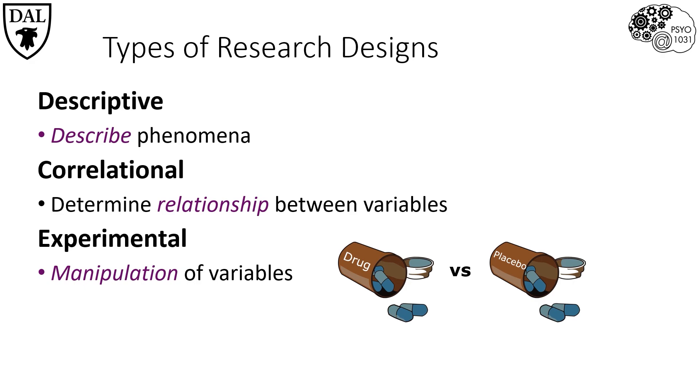In an experimental design, what we're asking is whether or not something causes something else. For instance, does my new drug cause a decrease in depression-like symptoms?